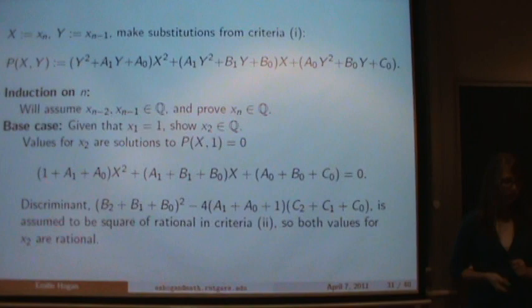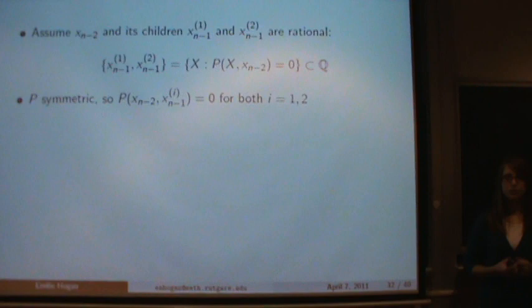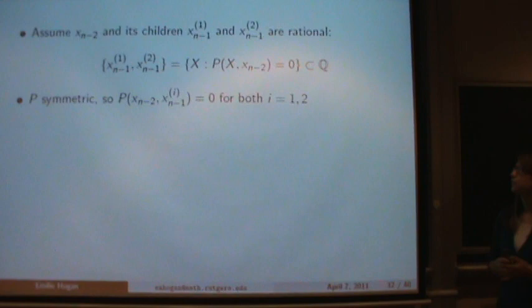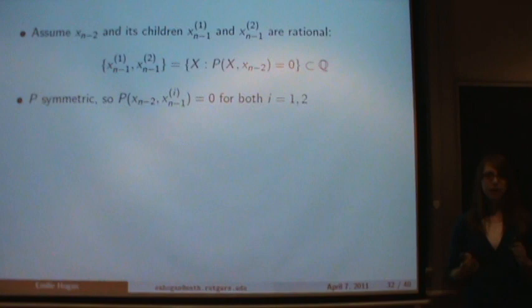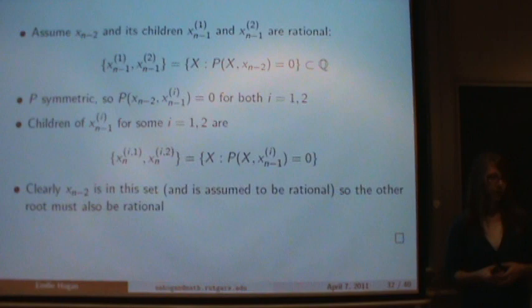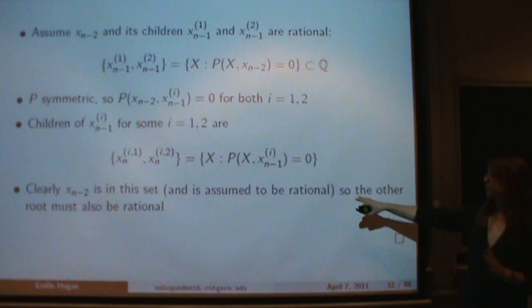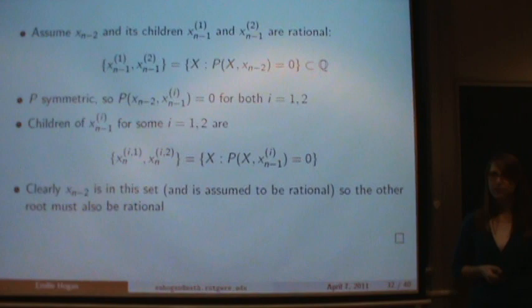For the induction step, we assume x_{n-2} and its two children are rational. Those children are solutions to the quadratic P(X, x_{n-2}) = 0. Since P is symmetric by criterion 1, we know P(x_{n-2}, x_{n-1}) = 0. So when we look at the two children of x_{n-1}, which solve P(X, x_{n-1}) = 0, we know x_{n-2} is one solution. Since the product of the roots is the rational constant term, the other root must also be rational.